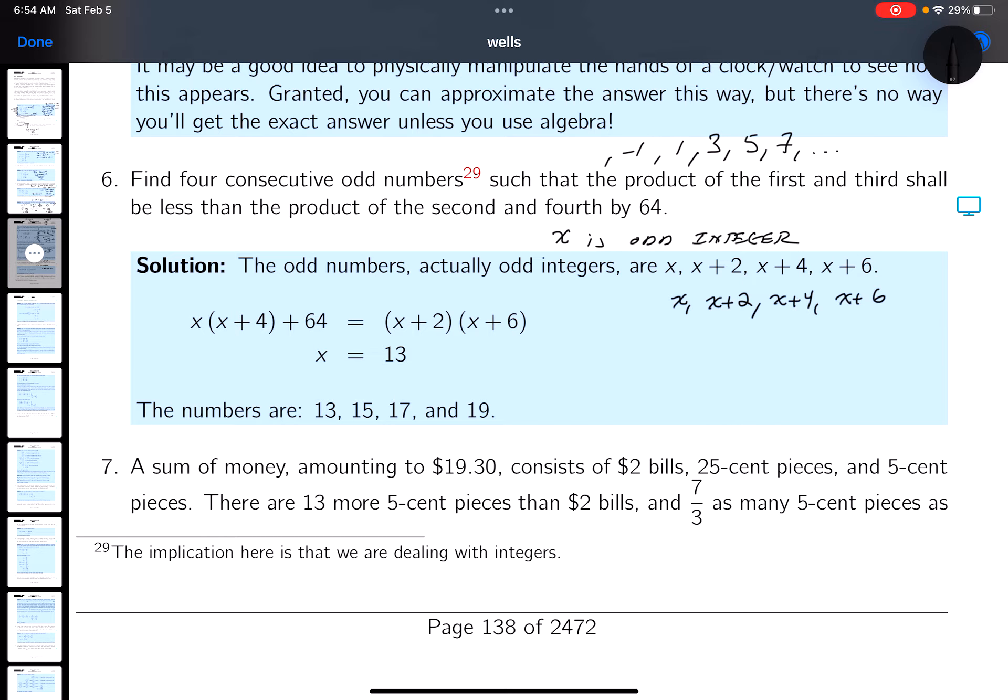There's going to be four of them - I'm reading that they said there's four consecutive odd integers, so I keep going up by two. I guess - find four consecutive odd integers, such that the product of the first and third, well this is the first, this is the third, what's the product? x times x plus 4. Such that the product of the first and third shall be less than the product of the second and fourth. This is the second and fourth.